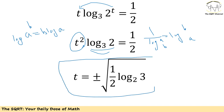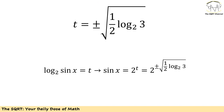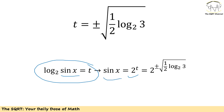Now we replace t with what we defined before. We have log of sine of x in base 2 equals t, which means sine of x equals 2 to the power of t. So sine of x equals 2 to the power of plus or minus the square root of one half times log of 3 in base 2. Therefore x equals arcsin of that value.